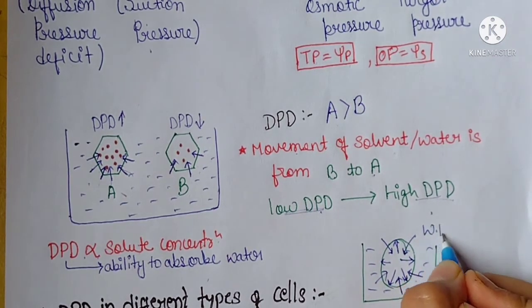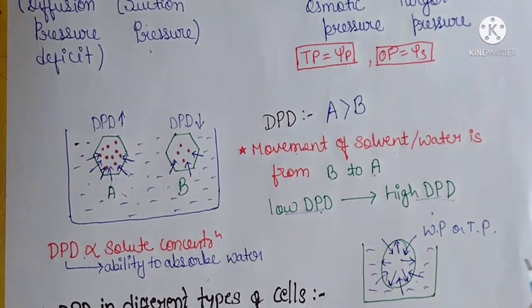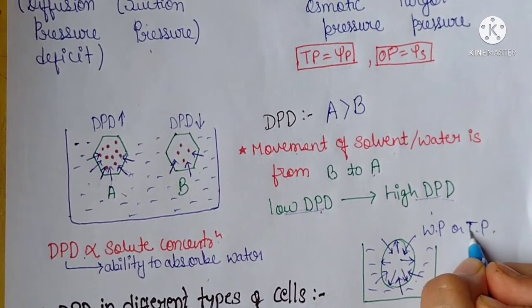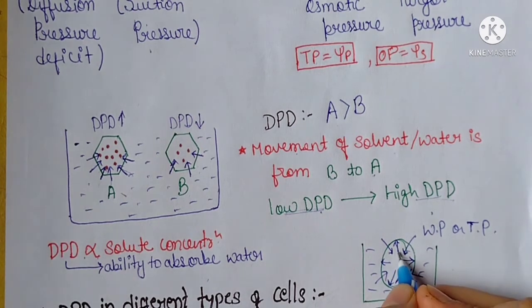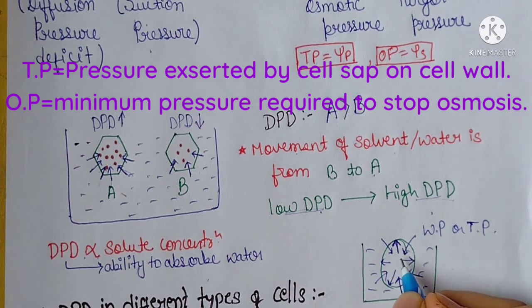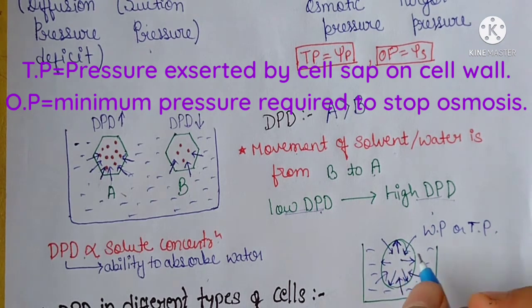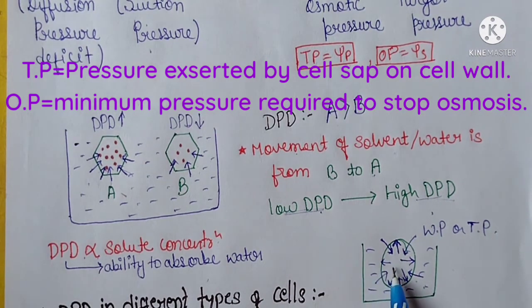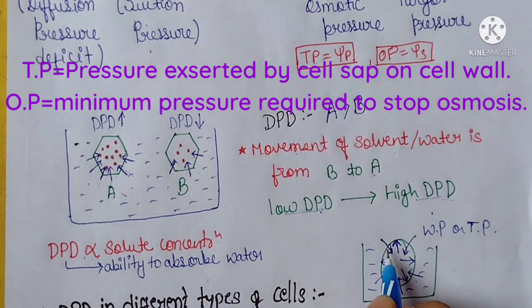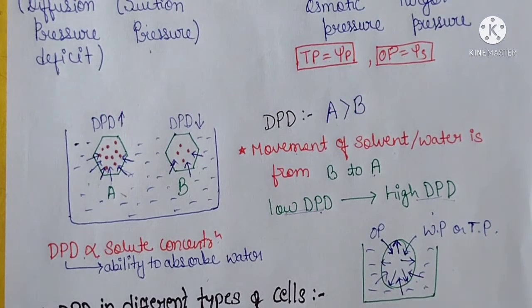Now the cell will not absorb more water because it is filled with pressure, which we call wall pressure or turgor pressure — they both mean the same thing. Because this cell is turgid, this pressure is turgor pressure. The turgid cell exerts wall pressure, which is an equal and opposite pressure that stops osmotic pressure from pushing more water in.